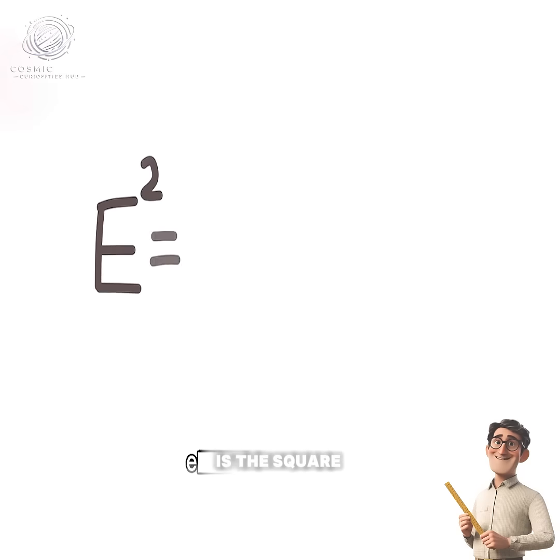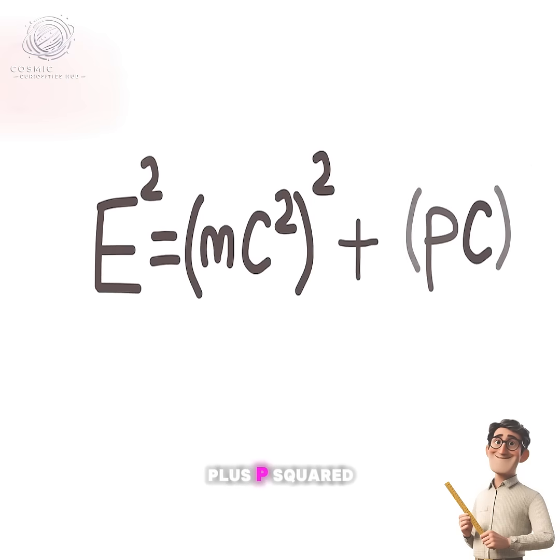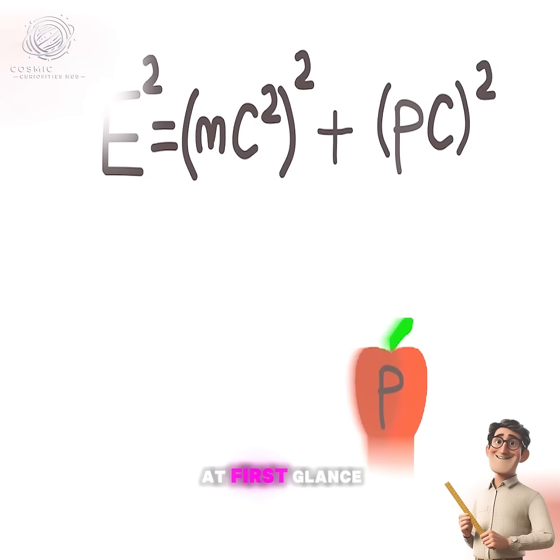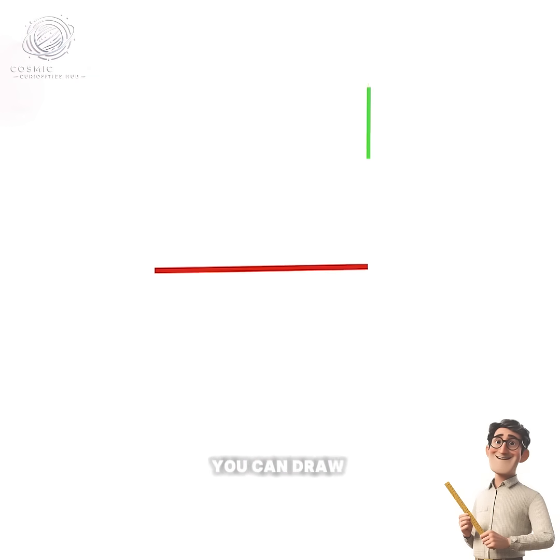Its complete expression is E² = (mc²)² + (pc)², where p refers to the momentum of the object. At first glance you might find this equation rather complex, but in reality you can draw a right triangle.